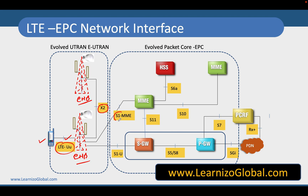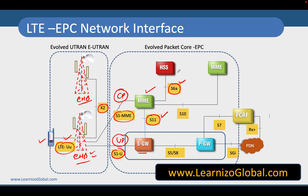We have the S1-MME interface connecting the eNodeB to the MME, and the S1-U interface between the eNodeB and the SGW. The S1-MME interface typically takes care of control plane communication with the eNodeB, while S1-U typically takes care of user plane communication towards the eNodeB. The MME controls the SGW by using the S11 interface and connects to the HSS on the S6A interface. MMEs can also communicate with each other by using the S10 interface.